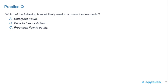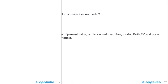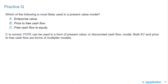Another practice question: Which of the following is most likely used in a present value model? A) enterprise value, B) price to free cash flow, or C) free cash flow to equity. C is correct. Free cash flow to equity can be used in a present value or discounted cash flow model. Both enterprise value and price-to-free cash flow are forms of multiplier models.